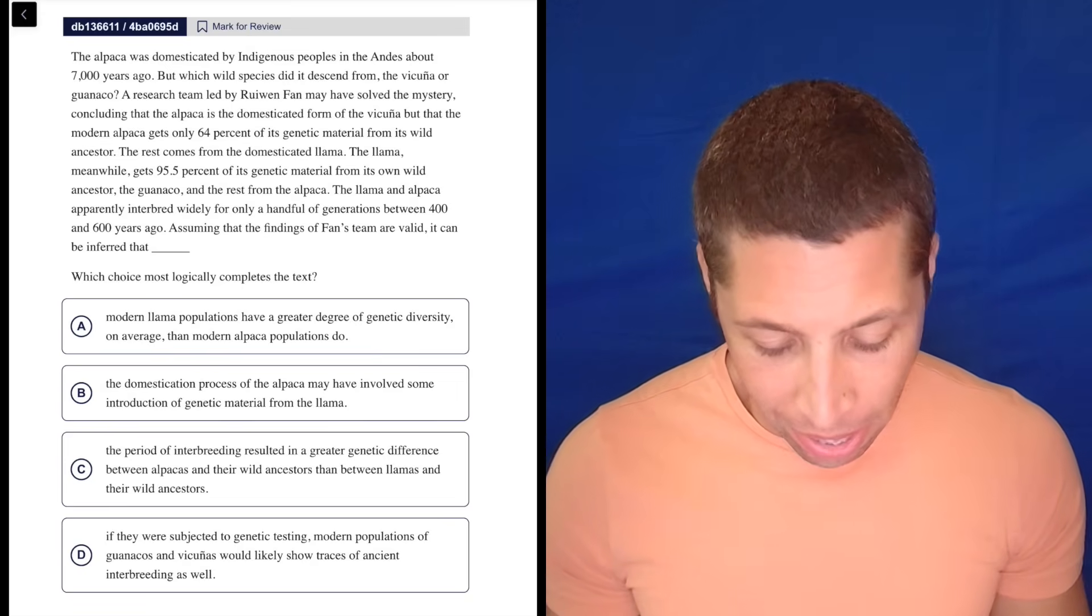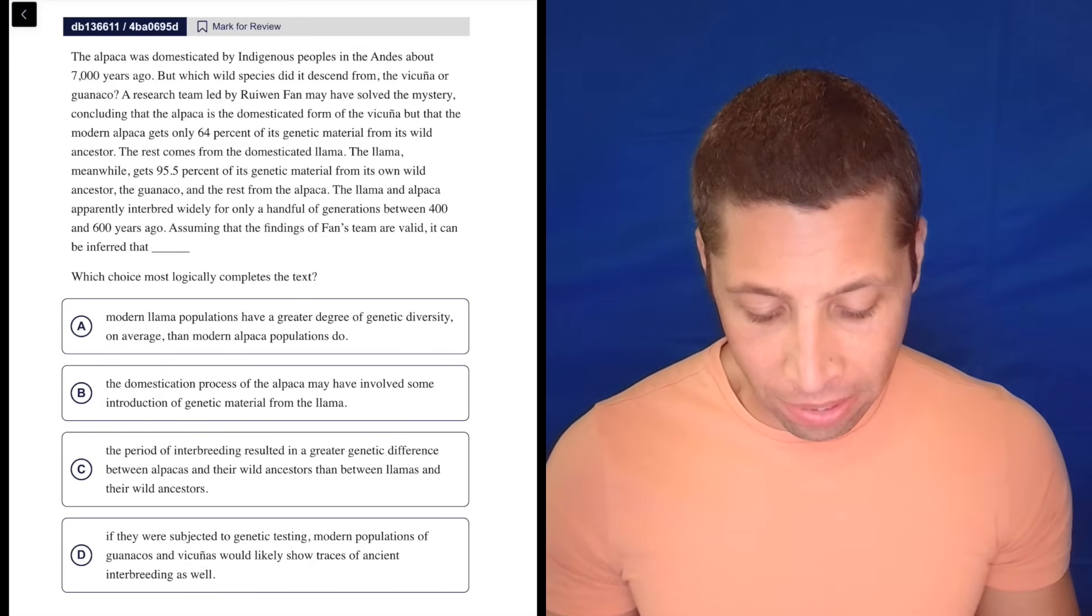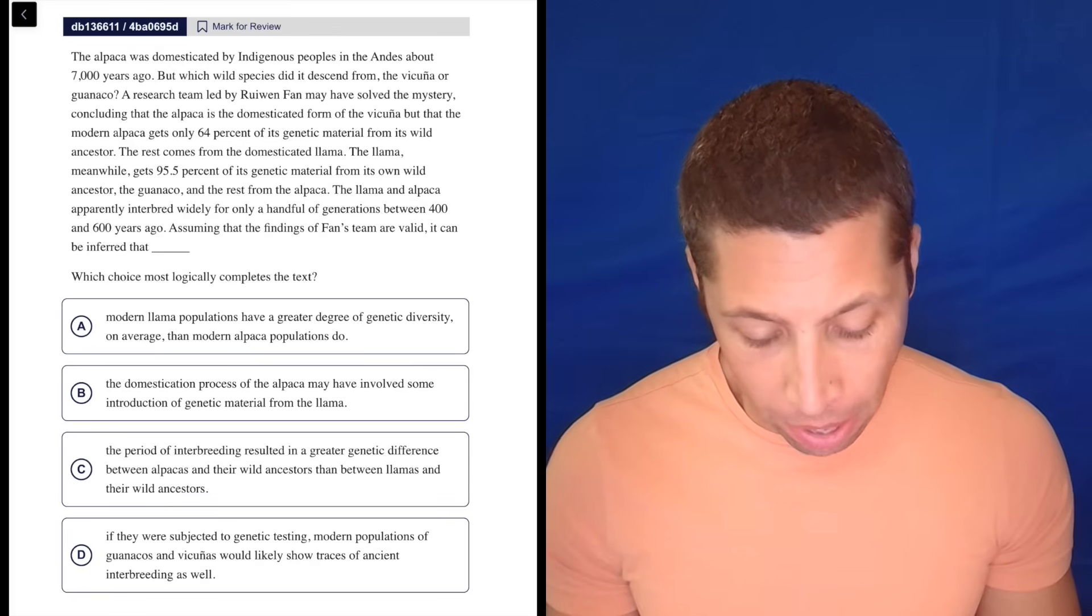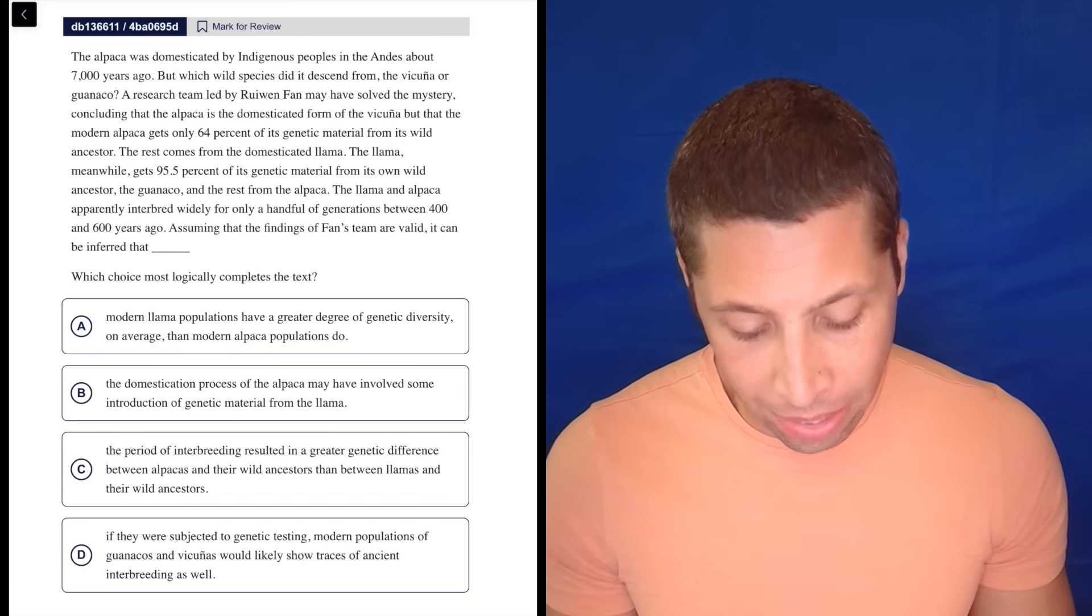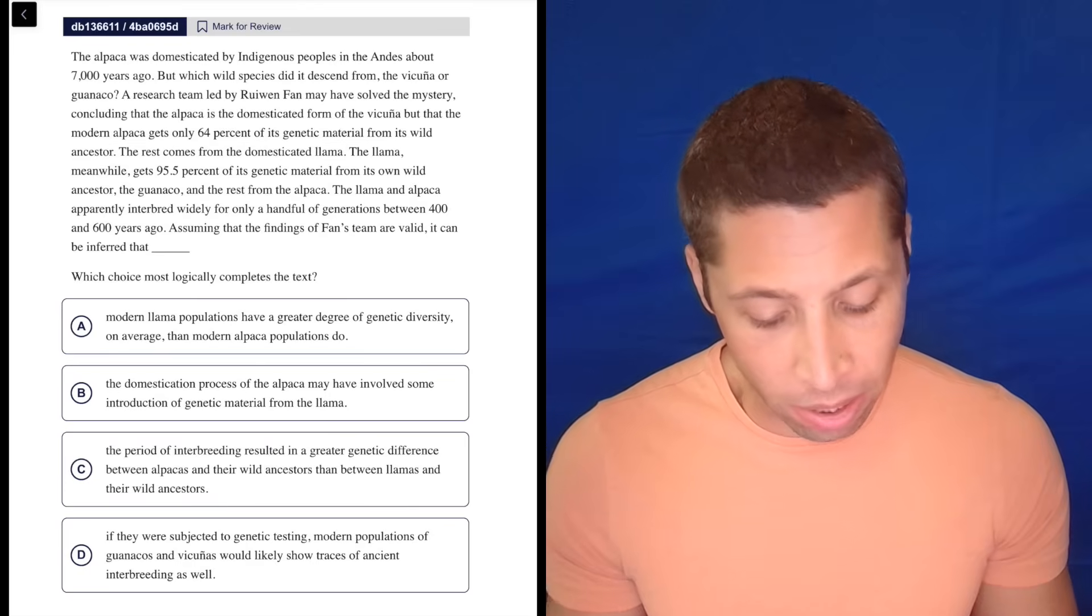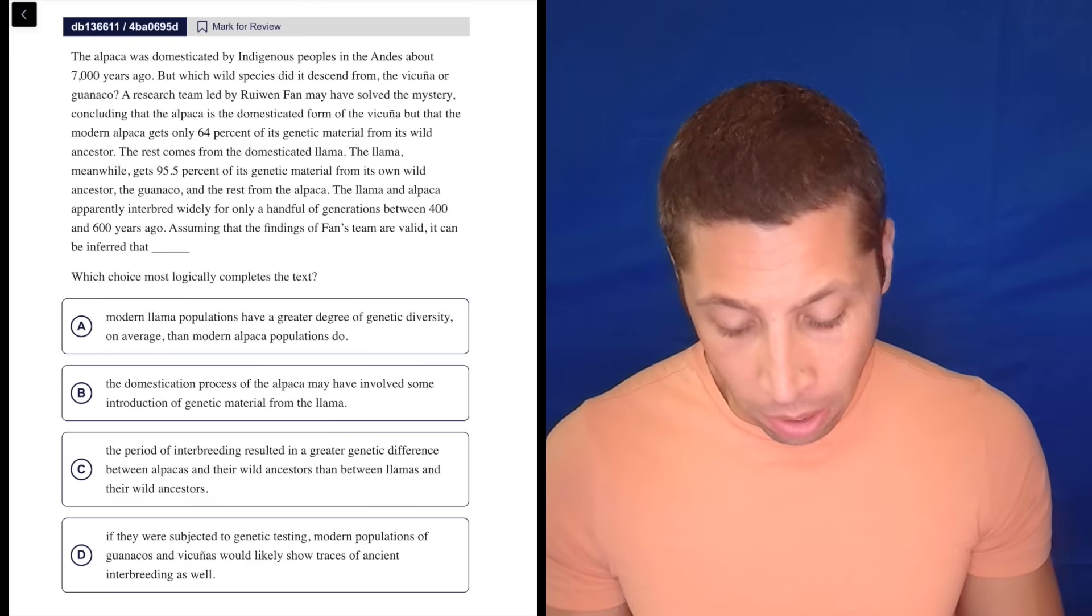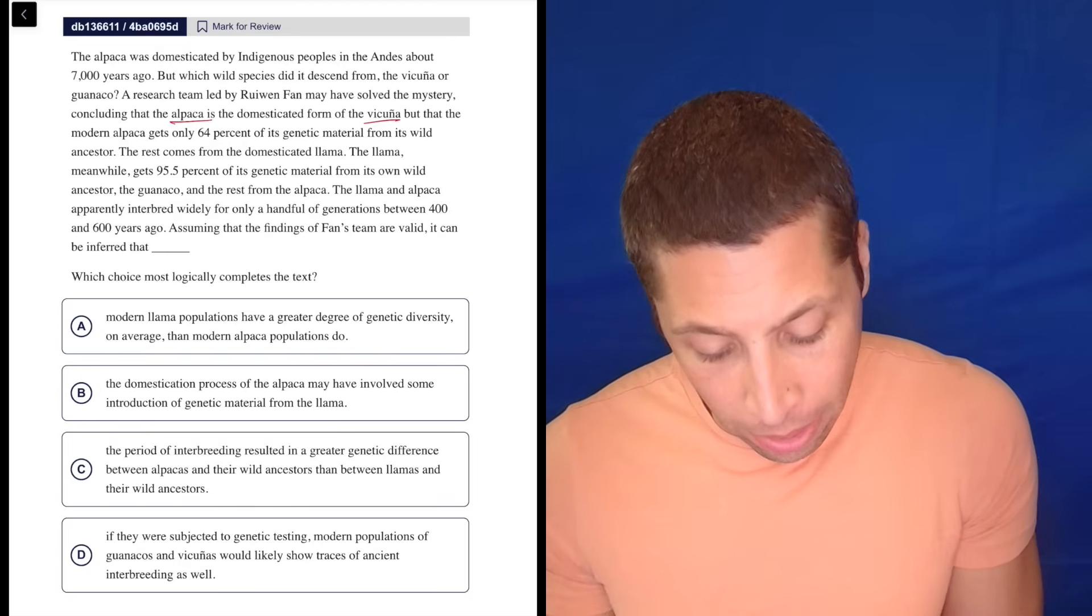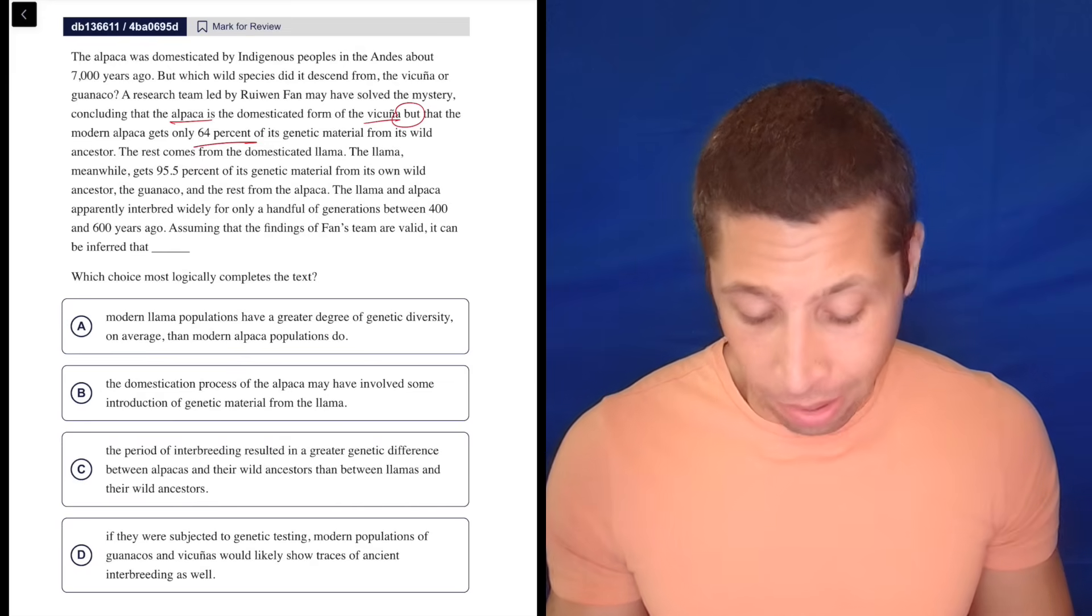The alpaca was domesticated by indigenous peoples in the Andes about 7,000 years ago, but which wild species did it descend from, the vicuña or huenaco? A research team led by this person may have solved the mystery, concluding that the alpaca is the domesticated form of the vicuña, but that the modern alpaca gets only 64% of its genetic material from its wild ancestors. So they have a conclusion, right? Alpaca is vicuña, but only 64%. Anytime I see a but, it's important. I pay attention to that.